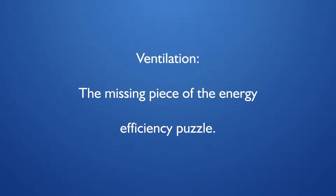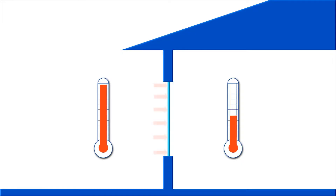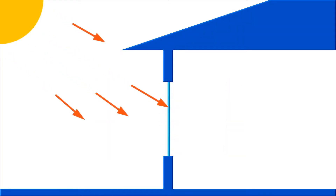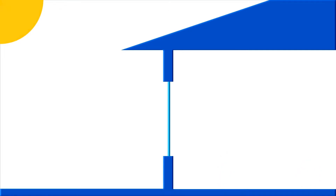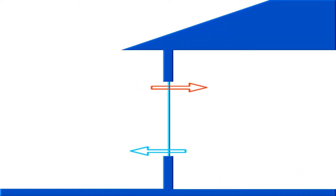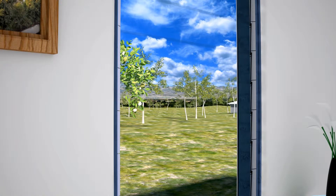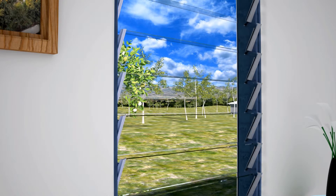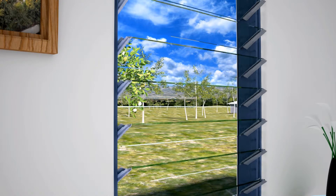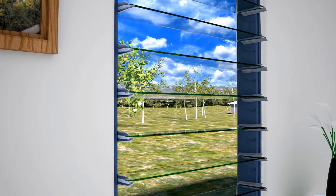Discussions of the energy efficiency of windows generally revolve around how well the window insulates against heat transfer, how much solar heat gain comes through the window in the form of sunlight, and how tightly the window seals against air infiltration. While these are important measures, they ignore the fact that one of the primary functions of a window is to open up and let fresh air in to naturally cool and ventilate a building.